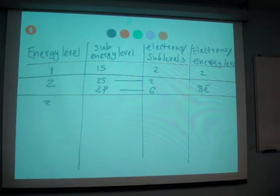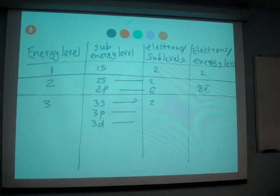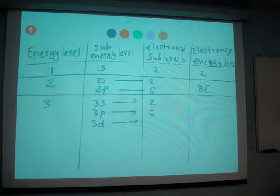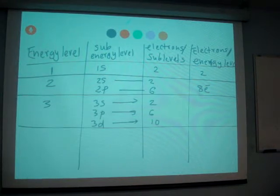For energy level 3, we have 3 sub levels: 3s, 3p and 3d. Their maximum capacity for each sub level, s is 2, p is 6 and d is 10. So we have 10 electron, maximum 18 electron, I'm sorry, 18 electron capacity, maximum capacity for energy level 3.